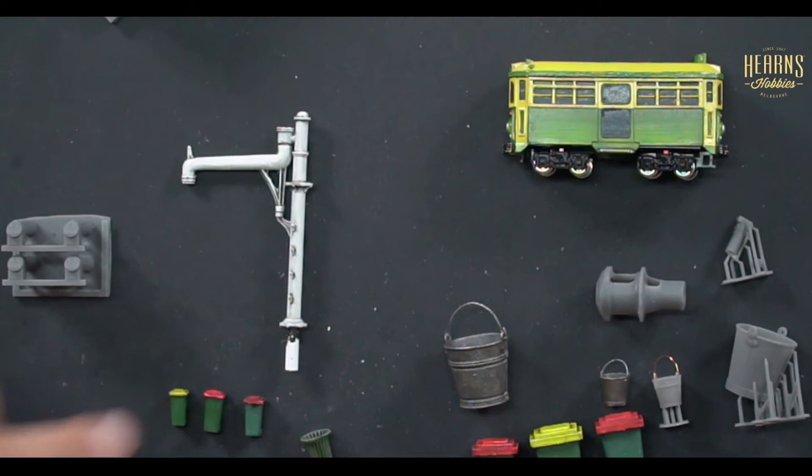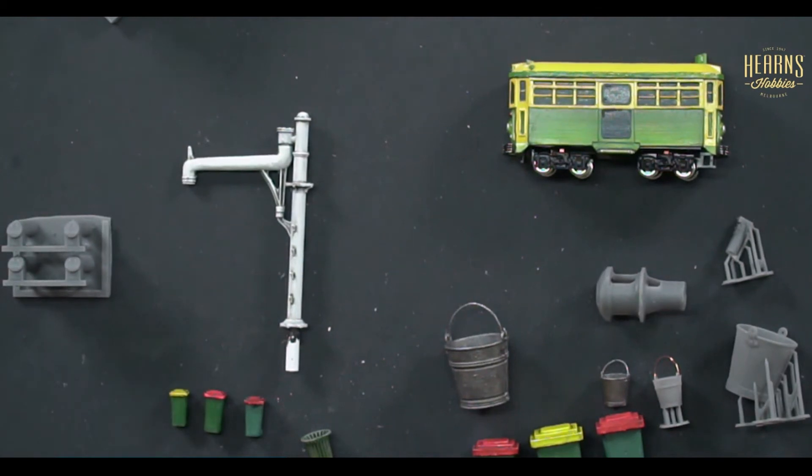Everyone knows the wheelie bins. I think 60 liter and 120 or something like that. There's a couple different bins. We have leather boxes and the phone box, the Telstra phone boxes. They've been very popular. We've got a very unique shape about them.